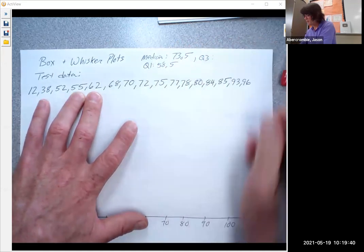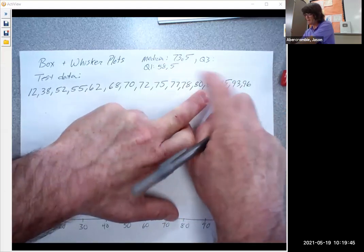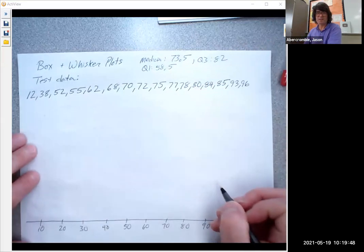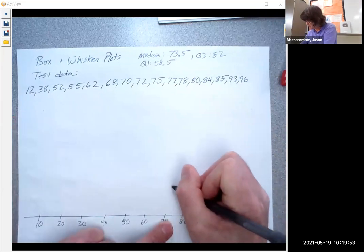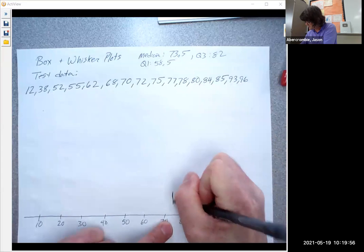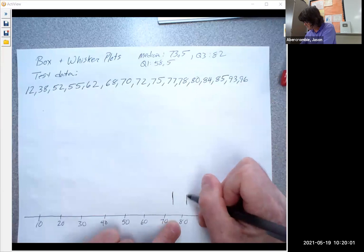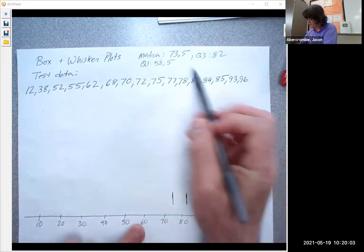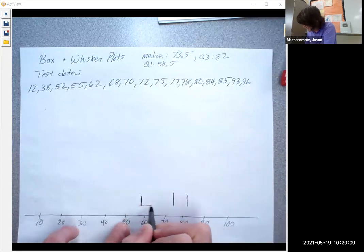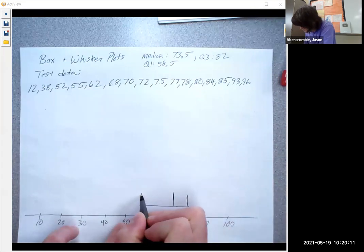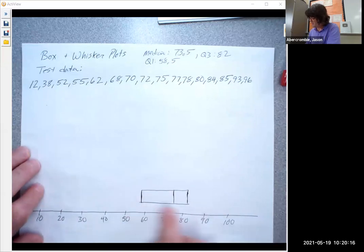And then for Q3, counting 1, 2, 3, 4, that's the top quarter right there. The average of 80 and 84 is going to be 82. So let's put those, let's put my box down. The median is 73.5. We'll put that right here. And then the Q3 is 82. And then the Q1 is 58.5. We'll put that right here. And we'll draw my box. And so this is Q1, median, Q3.